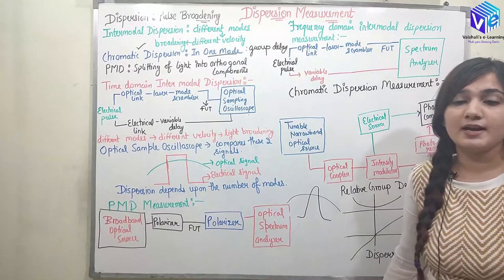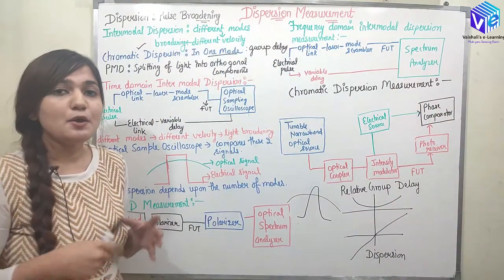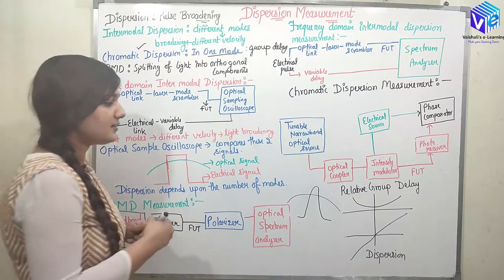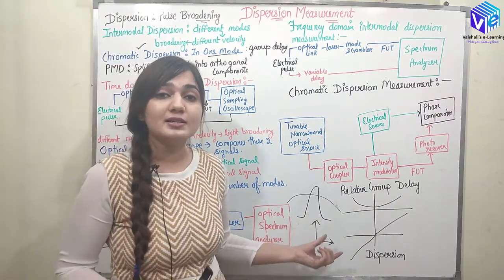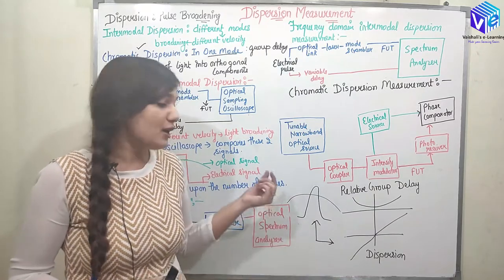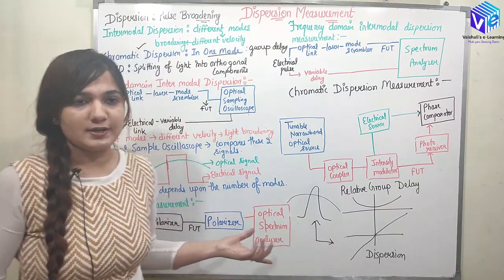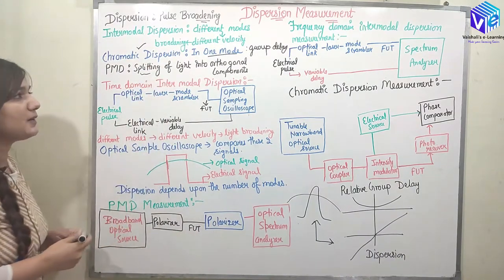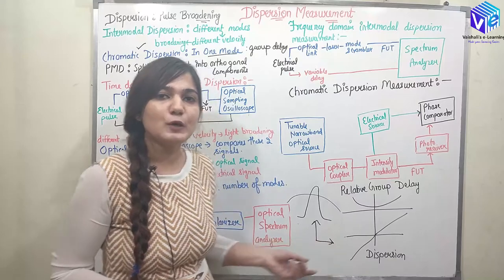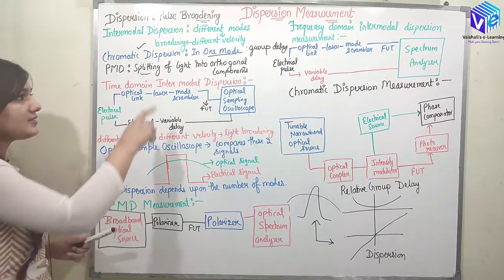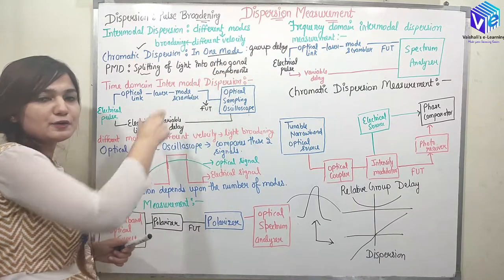Now coming to PMD — polarization mode dispersion. We know the effect of polarization. A signal can have a vertical polarized component and a horizontal polarized component, and both of these signals travel with different speeds. When these two signals travel with different speeds inside the optical fiber they cause pulse broadening. PMD describes the splitting of light into orthogonal components — one vertical and one horizontal — which travel at different speeds through the fiber.